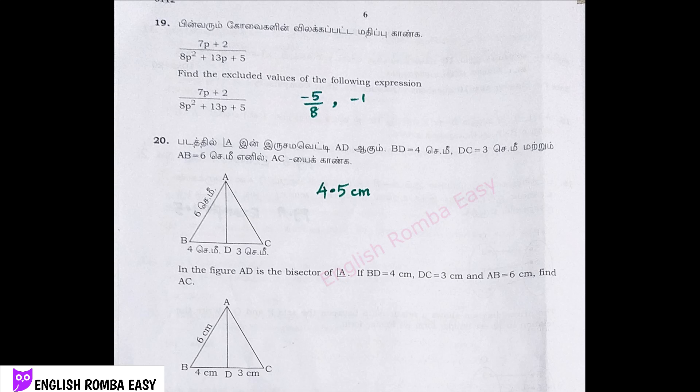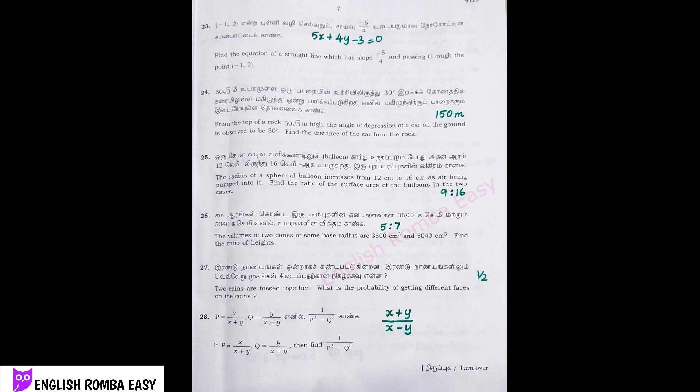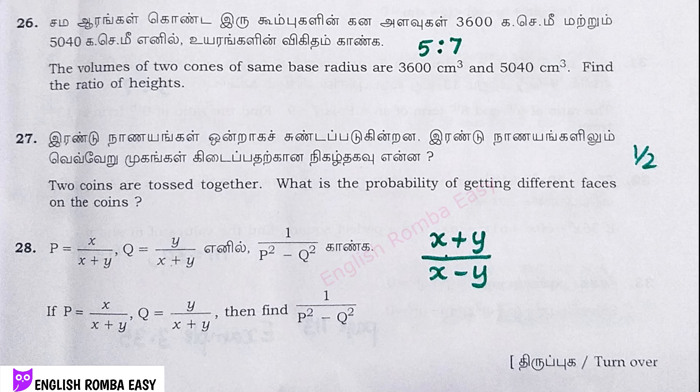Question 19 answer: minus 5 by 8, and one value minus 1. Question 20 answer: 4.5. Question 21: see English Medium Books page number 208, Example 5.2. Question 22: page number 218, Example 5.11. Questions 25 answer: 9 is to 16. Question 26 answer: 5 is to 7. Question 27 answer: 1 by 2. Question 28 answer: x plus y by x minus y. That completes Part 2.